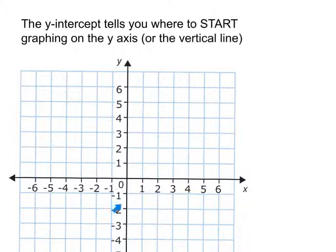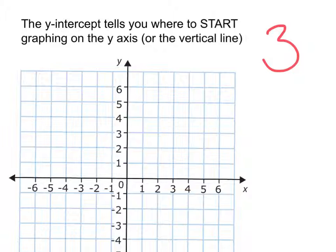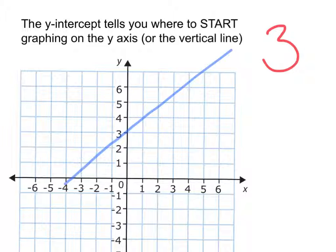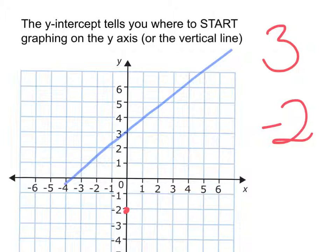We've got our x-axis and our y-axis that goes up and down. The y-intercept tells you where to start graphing on the y-axis. For example, if the y-intercept is 3, you're going to start at the origin point, count up 3, and this is where you start graphing your line. If the y-intercept is negative 2, we start at the origin and go down 2, and that's where we start graphing. The y-intercept is where we start on the y-axis.